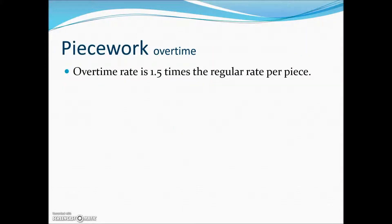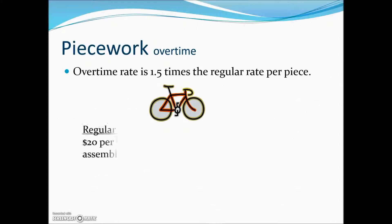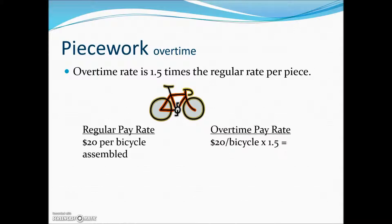Piecework employees, like other workers, are paid time and a half for overtime. It's common for the overtime rate to be one and a half times the regular rate per piece. So if the regular pay rate is $20 per bicycle, time and a half would be $20 times 1.5, or $30 per bicycle.